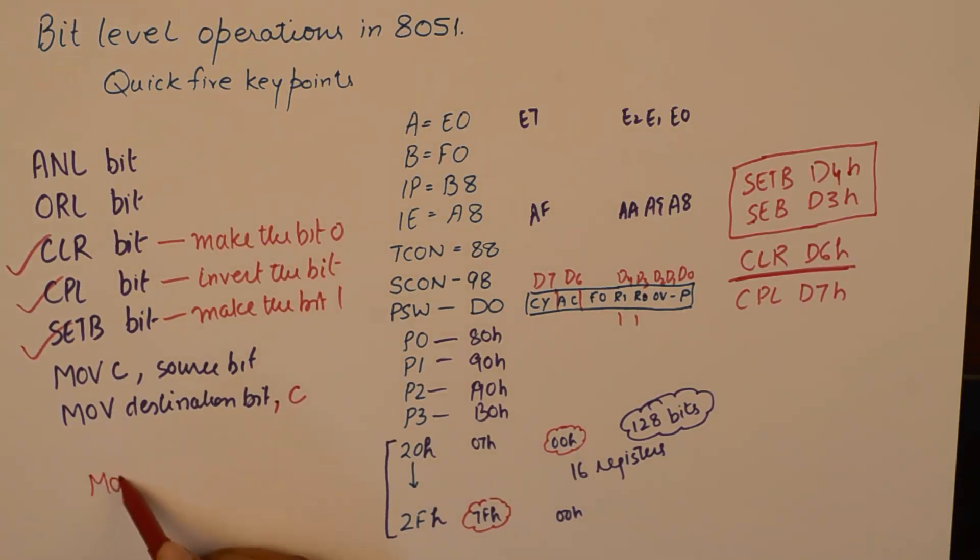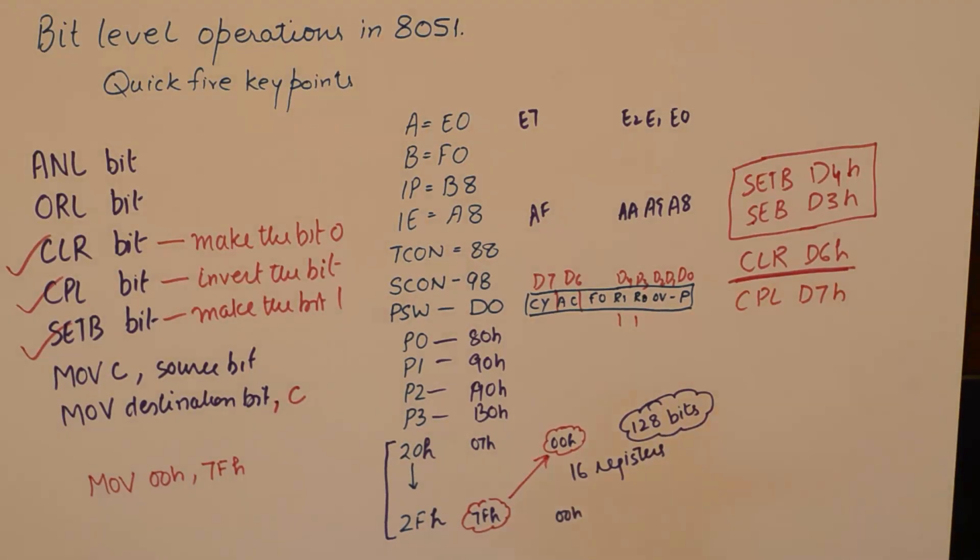I cannot use this instruction MOV 00H comma 7FH, or if I want to move the contents of 7FH bit into 00H. I cannot use this instruction. This is going to be wrong.